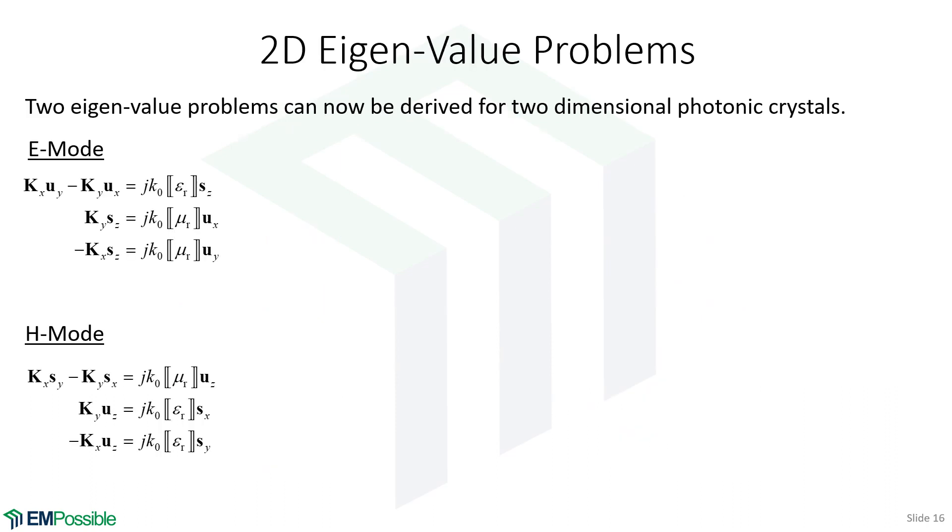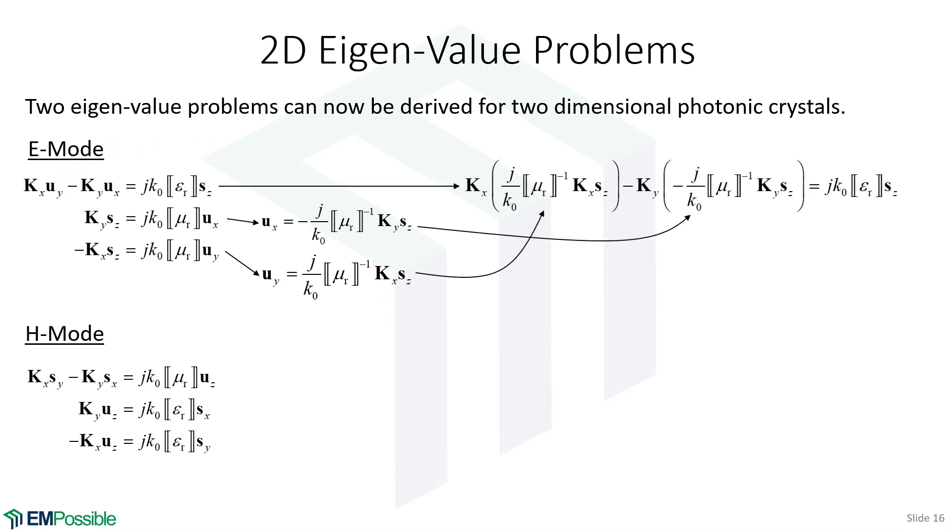The first thing we'll do, we'll start with the E mode. We will take these second two equations and solve them for UX and UY. We solved that second equation for UX and the third equation for UY. Now, we'll take this expression for UX and plug that in. We'll take this expression for UY and plug that into our first equation. So, let's go ahead and do that. Now, we can multiply it out, and we can simplify it, and we end up with our final eigenvalue problem just in terms of SZ.